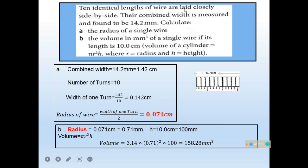Ten identical lengths of wire are laid closely side by side. Their combined width is measured as 14.2 millimeters. Calculate the radius of a single wire. The combined width of 10 wires is 14.2 mm; converting to centimeters and dividing by 10 gives the width of 1 wire as 0.142 cm. The radius is half of that: 0.071 centimeter.